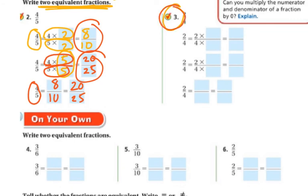I'm going to have you do numbers 3, 4, 5, and 6. Again, it says two equivalent fractions, so you get to pick what you're going to multiply the top and bottom by to make them equivalent. If you need me, I will be on the carpet. Good luck.